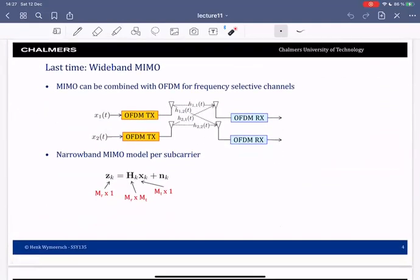In case we have certain delay spread in the channel we work in the wideband regime where we combine MIMO with OFDM. We have synchronized OFDM transmitters at all antennas and synchronized OFDM receivers at all antennas. Then we obtain per subcarrier a simple MIMO model as before, the narrowband MIMO model for subcarrier K. We just have a whole bunch of these.